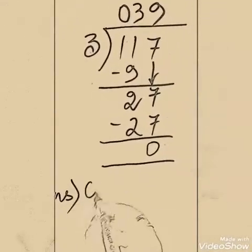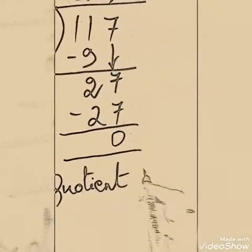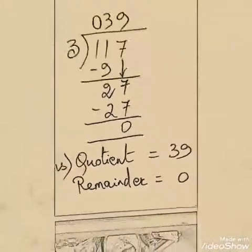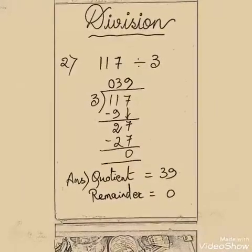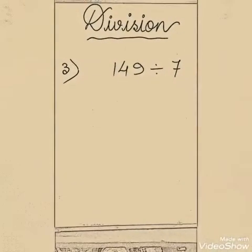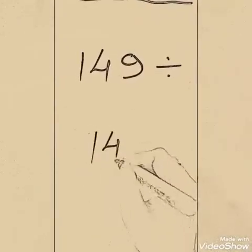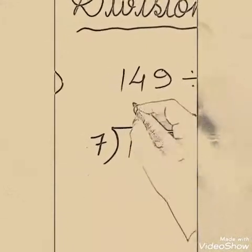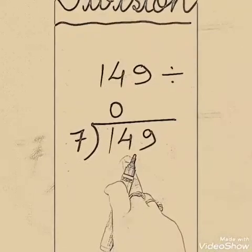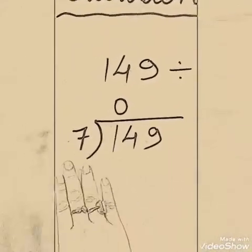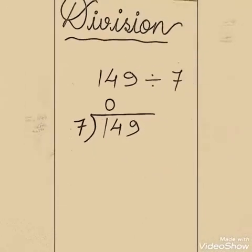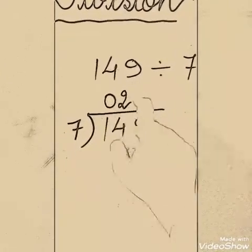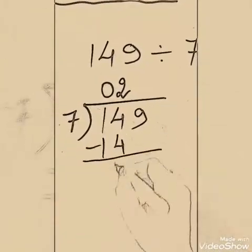Answer: Quotient is equal to 39, and remainder is equal to 0. Next: 149 divided by 7. So let's start writing. Write 149 — the dividend — in the middle, division symbol, 7 outside. Now inspection: 1 is less than 7, so put 0 on top of 1. Take these two digits together — that makes 14. 14 is greater than 7, so say the table of 7. 7 ones are 7, 7 twos are 14. Write 2 on top of the second digit, which is 4. 7 twos are 14 — subtract, we get 0.